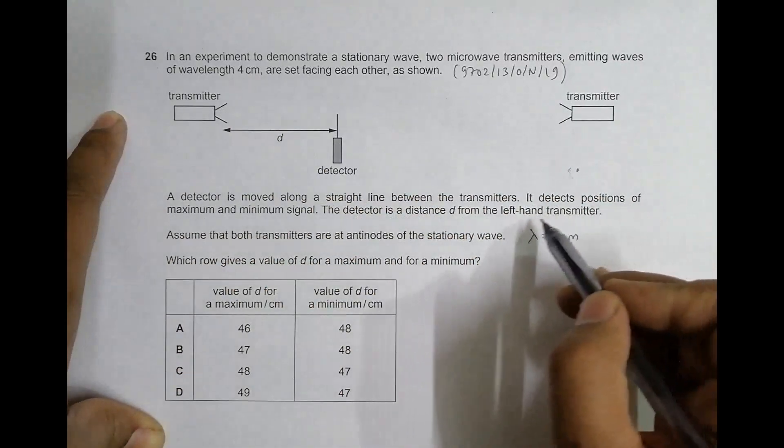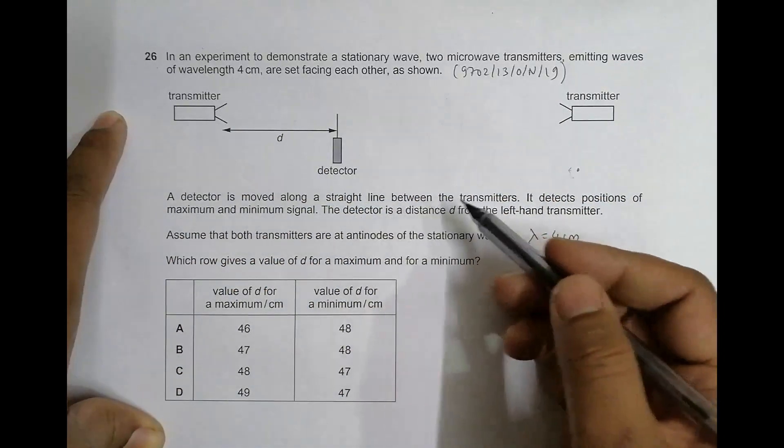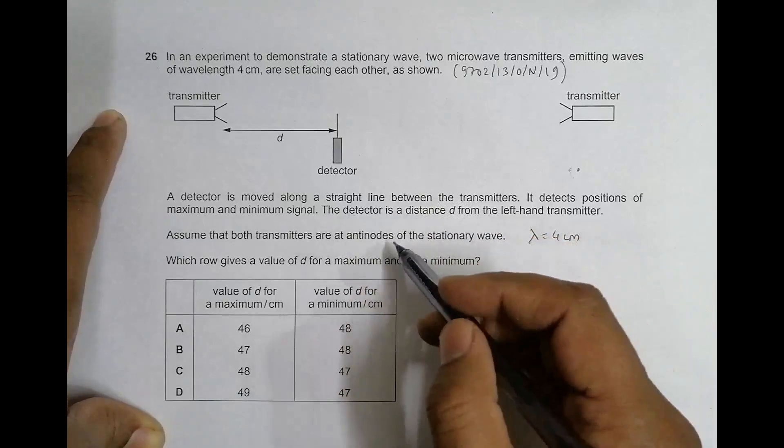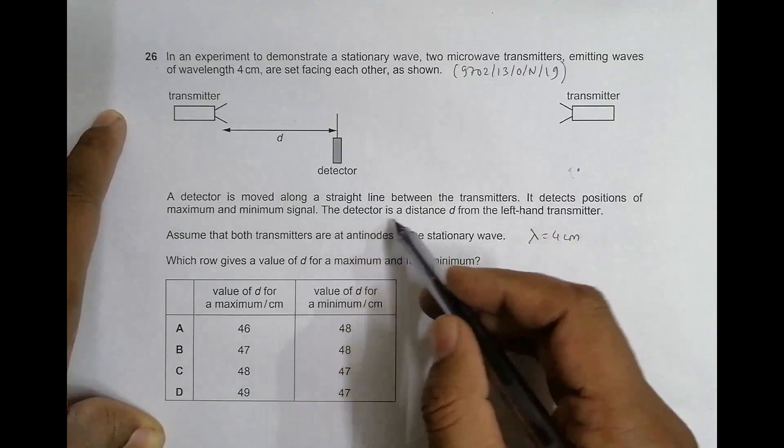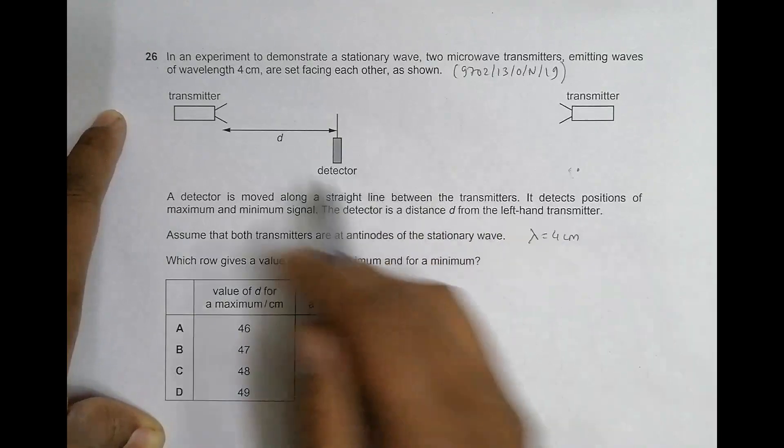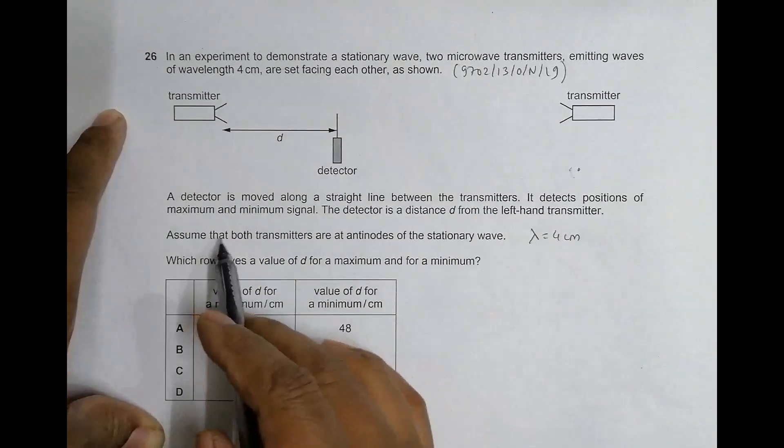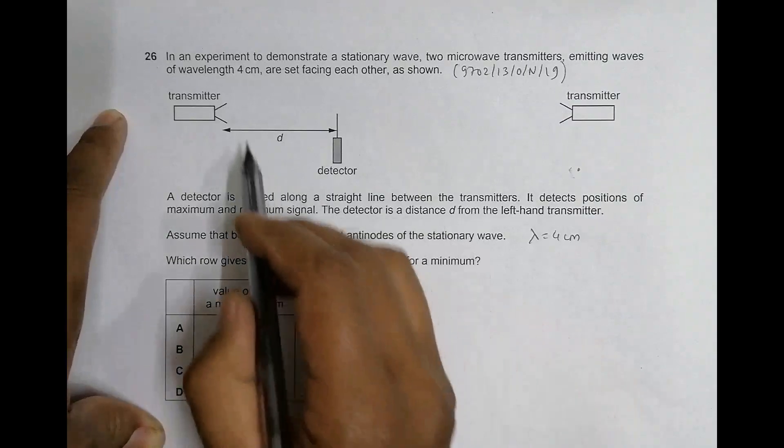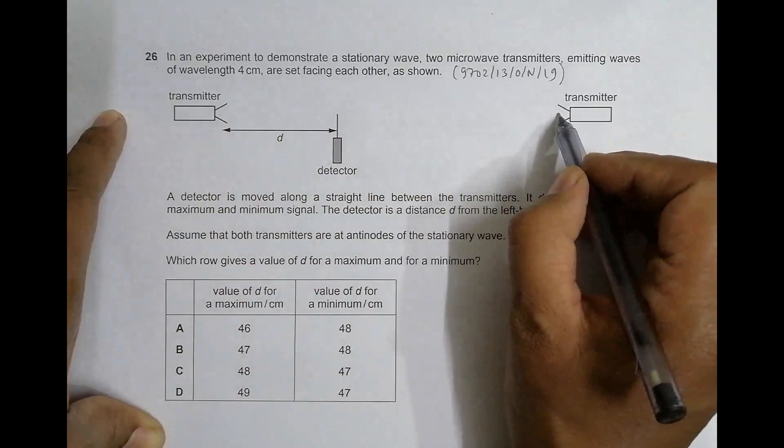It detects positions of maximum and minimum signal. Of course, if they are forming stationary waves they will definitely do that. The detector is at a distance D from the left hand transmitter. Assume that both transmitters are at antinodes of this wave, so it means here and here there are antinodes.